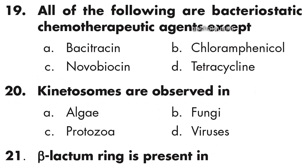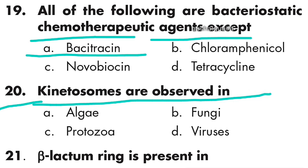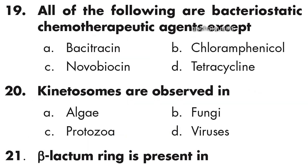Question 19: All of the following are bacteriostatic chemotherapeutic agents except Bacitracin. Option A is right. Question 20: Kinetosomes are observed in protozoa. Option C is right.